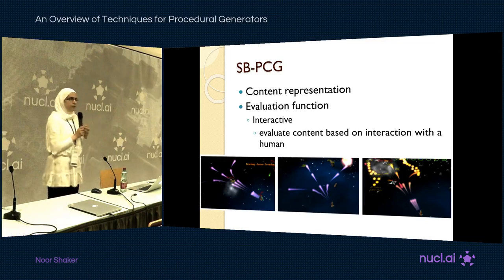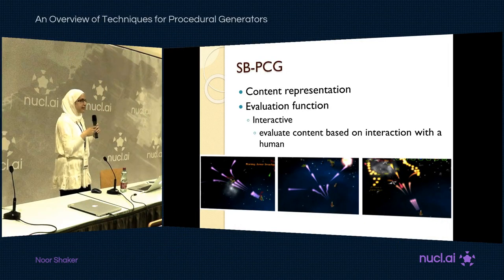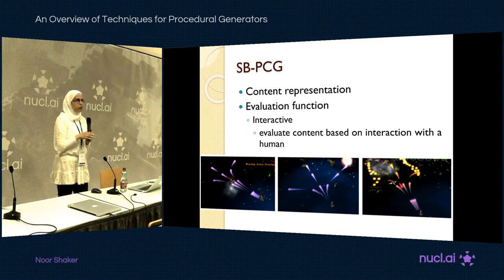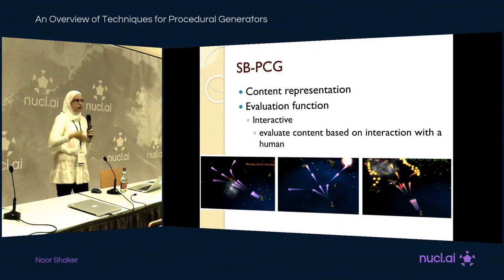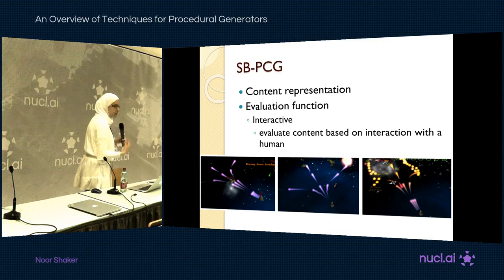The final type of evaluation function is interactive: a human interacts with the system and gives a score, either implicitly or explicitly. In the Galactic Arms Race example, the method indirectly learns player preferences by detecting how fast and how often they choose each weapon. In another example for evolving car racing tracks, players were shown tracks, allowed to play them, and then asked to rate them on a scale of one to five.